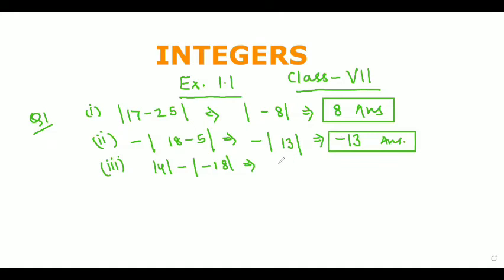In the next part, if 4 is coming out from the absolute value, it will remain 4. And if minus 18 is coming out from the absolute value, it will become positive 18. But with a negative sign outside, our answer will become minus 14.